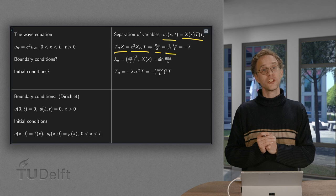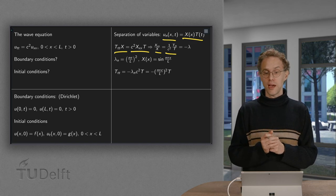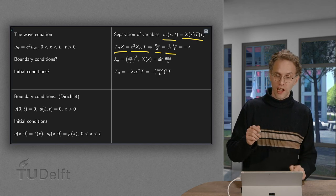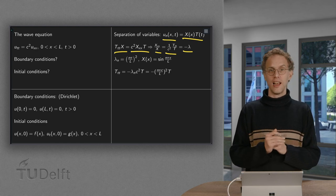Left hand side depends only on x. Right hand side depends only on time. So we have a constant and it's convenient to call this constant minus lambda.